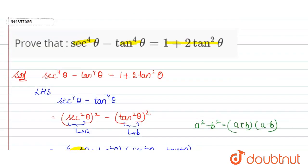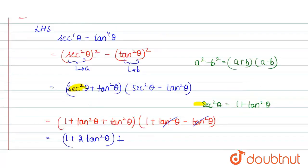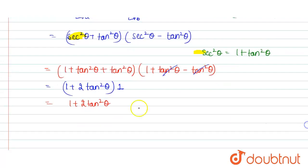This is nothing but our right hand side, that is 1 plus 2 tan squared theta. So left hand side is equal to right hand side. Hence, proved.